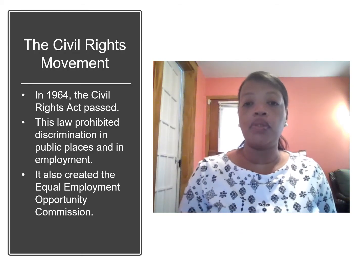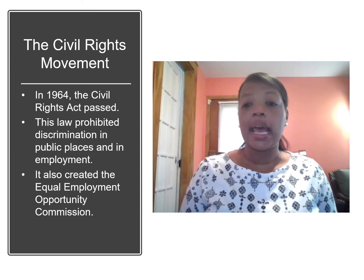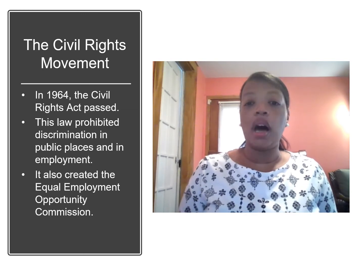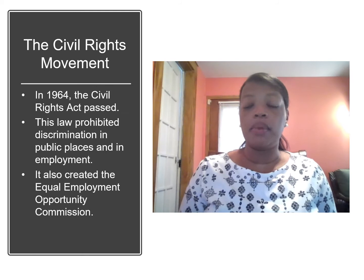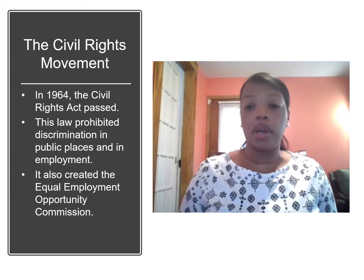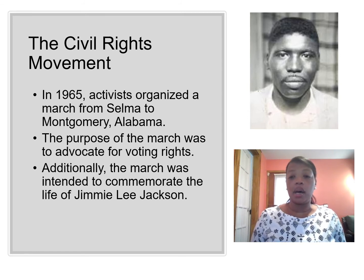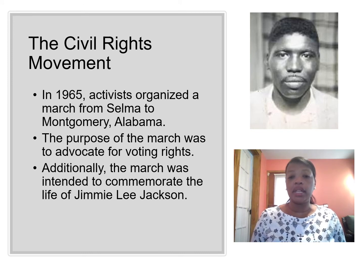In 1964, the Civil Rights Act was passed. This law prohibited discrimination in public places and in employment. The law also created the Equal Employment Opportunity Commission, whose job was to investigate and litigate employment discrimination. In 1965, activists organized a march from Selma to Montgomery, Alabama. The purpose was to advocate for Black voting rights. Additionally, the march was intended to commemorate the life of Jimmy Lee Jackson, a SNCC activist who was killed by an Alabama state trooper.